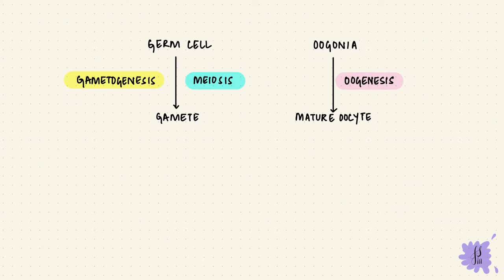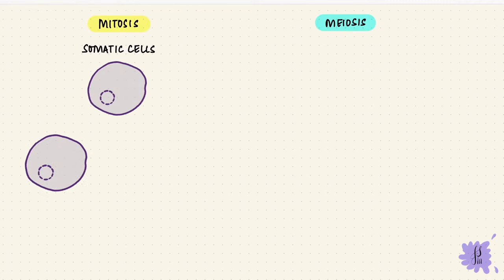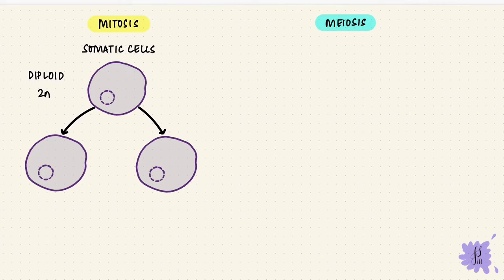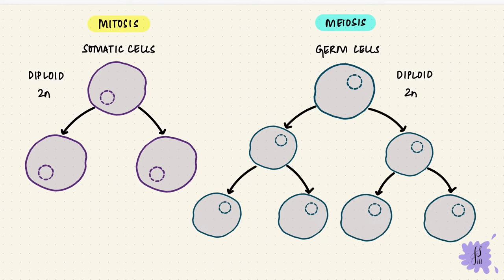To understand the steps of oogenesis we need to know meiosis first, so we're going back to cell biology. There's mitosis and there's meiosis. Mitosis is how somatic cells divide. Somatic cells are diploid cells — they have 46 chromosomes in 23 pairs, that's 2n, meaning diploid — and they divide into two diploid cells. The germ cell, like somatic cells, is also diploid with 46 chromosomes in 23 pairs. By meiosis, that number comes down to half — that's n, or haploid. In mitosis, the chromosome number doesn't change: one diploid cell divides into two diploid cells.